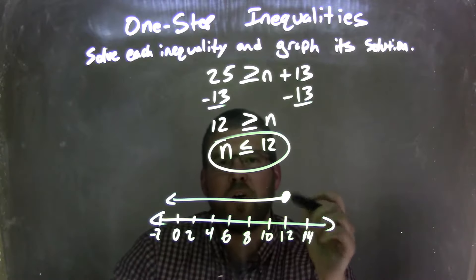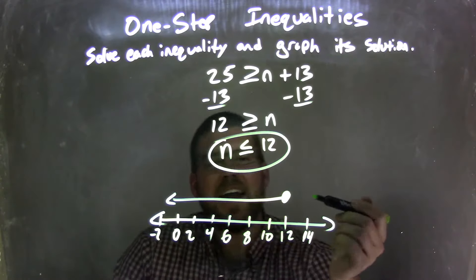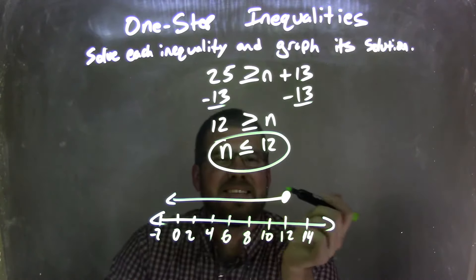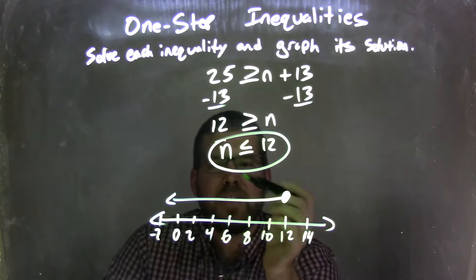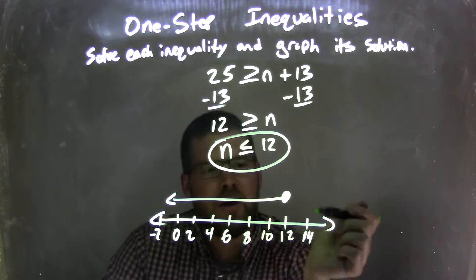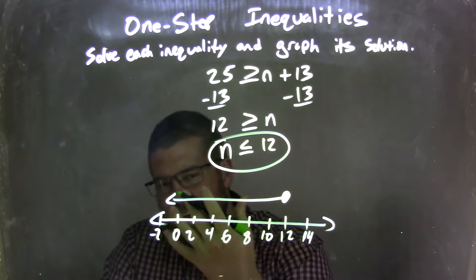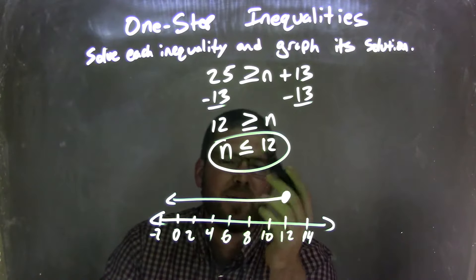I put a closed circle at 12, because n is equal to 12, and I drew my arrow to the left, because we said n is less than 12. So since n is less than or equal to 12, we're given this graph below, which matches the final answer of n is less than or equal to 12.